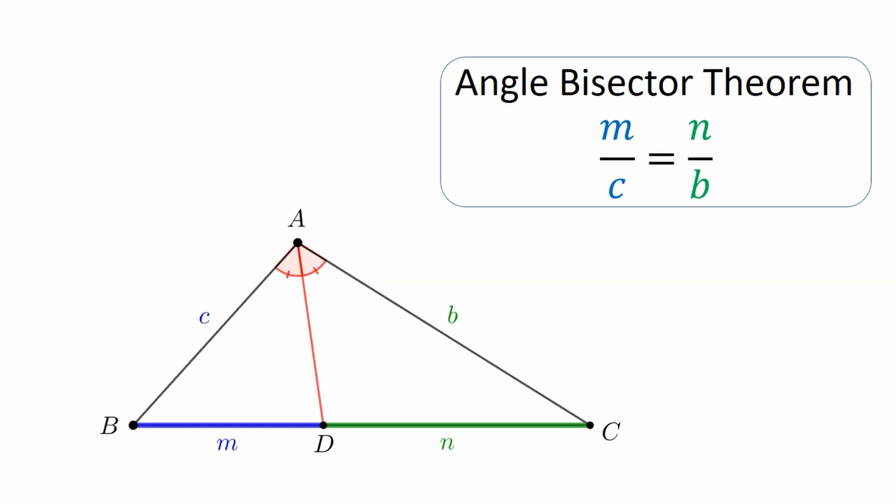As you can see, for example, it turns out that side AC is bigger than AB. So, the green segment N is bigger than blue segment M. It's not just that. It's proportional to the lengths. For example, if side small b is double side small c, then CN should be double M. But why is this true?